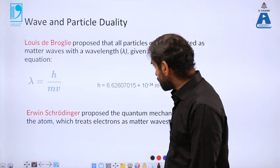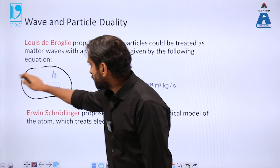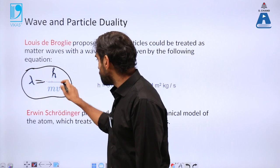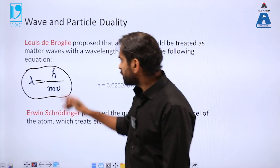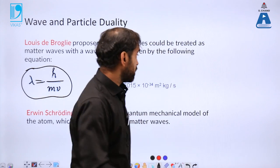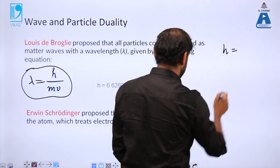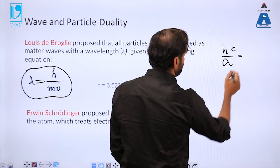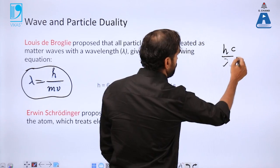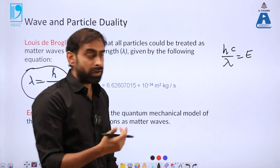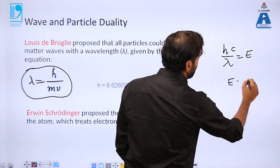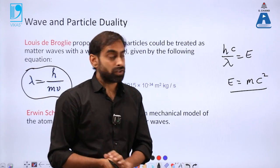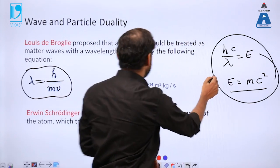De Broglie proposed the concept of dual nature of matter by giving an equation λ = h/(mv). This is an outcome of a very simple equation you might have learned, E = hc/λ, representing the energy of a wave, and another equation given by Einstein, E = mc², which relates velocity and mass of particle or matter with energy.